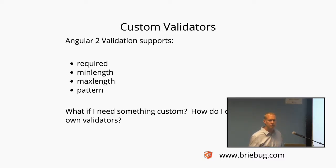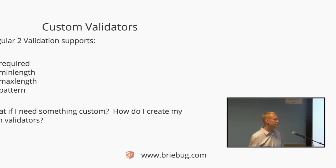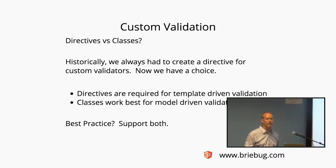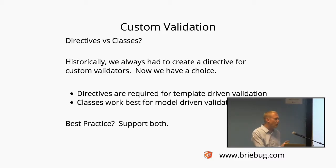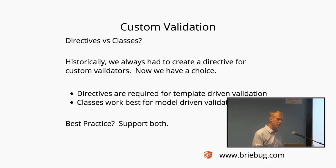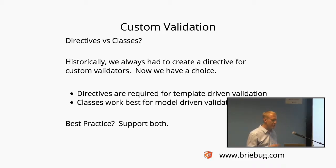So if I do need something custom, how do I create my own validator? Directives versus classes. Historically, we always had to create a directive because we're applying it attribute-based. Directives are required for template-driven validation — you have to be able to place it in the HTML so it can be applied to that element. Classes work best for model-driven validation, but you can use directive ones on models too. The best practice, I think, is to support both. That's what we're going to take a look at here with the email validator.